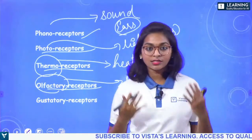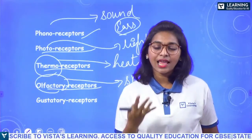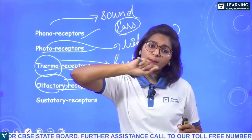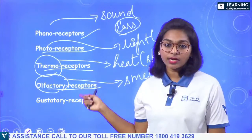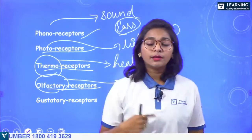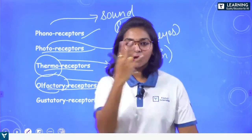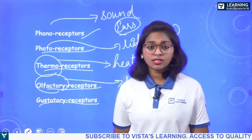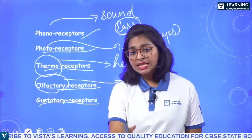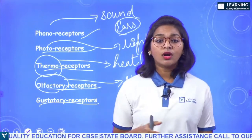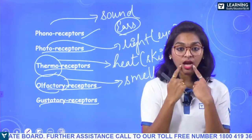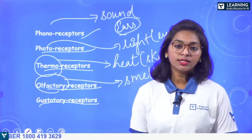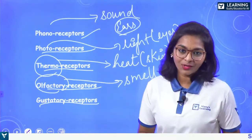Light is detected by the eyes, sound by the ears, and heat by the skin — the largest organ, which is spread all over the body and can sense the presence and absence of heat. Olfactory receptors relate to smell. Inside the nose, the lining is made up of nerve endings which absorb fragrance and send it to the brain. Gustatory receptors are the taste buds in the tongue — they tell us if something is sweet, sour, or bitter.